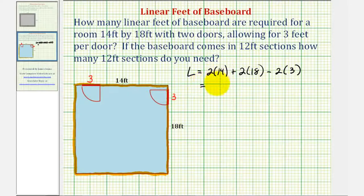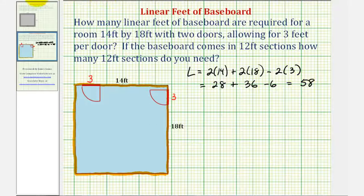So two times 14 is 28. Two times 18 is 36. Two times three is six. We have minus six. So this would be 58, which means you need 58 linear feet of baseboard.